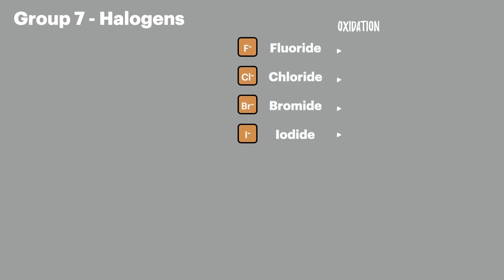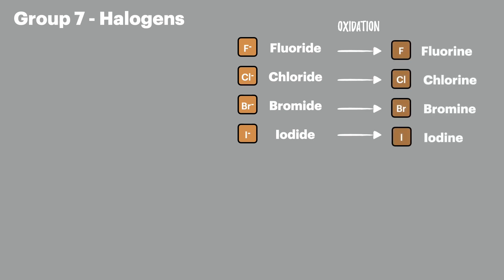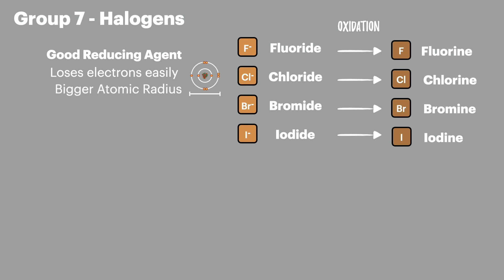Once we've got these halide ions we can reverse the process and oxidize them back to their atoms. Because they're being oxidized they act as reducing agents, and this is a key property that we're interested in when it comes to the reactions with concentrated sulfuric acid. A good reducing agent easily loses electrons because it has a bigger radius and more electron shielding, so the outer electrons don't feel the pull of the nucleus as much.